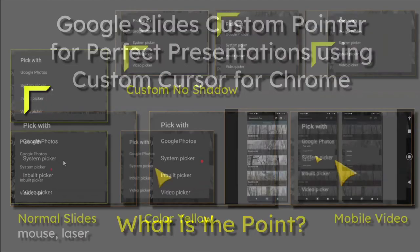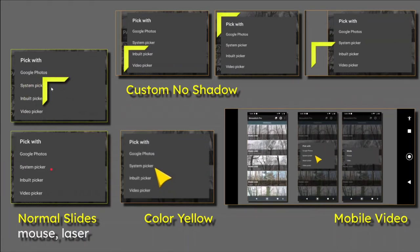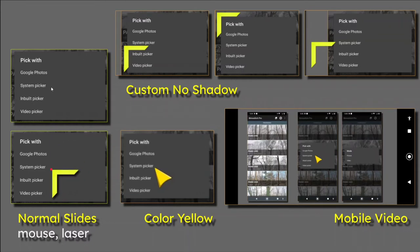Going over to the next slide — for Google Slides, normally what you get is a white, normal Windows pointer, very very small, and a laser dot which is also pretty small. Yesterday's video featured a named color: yellow, big pointer. You'll notice I've chosen the whole slide pointing to this label which is 'system picker,' from yesterday's video.